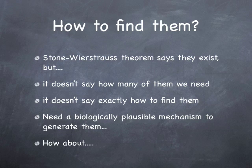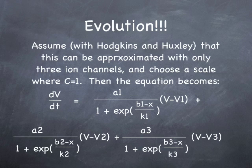Now, the question is how to find them, though. The Stone-Weierstrass theorem says they exist, but it doesn't say how many of them we need, and it doesn't say exactly how to find them. We need a biologically plausible mechanism to generate them. What could that mechanism possibly be? Ah, let's try evolution.